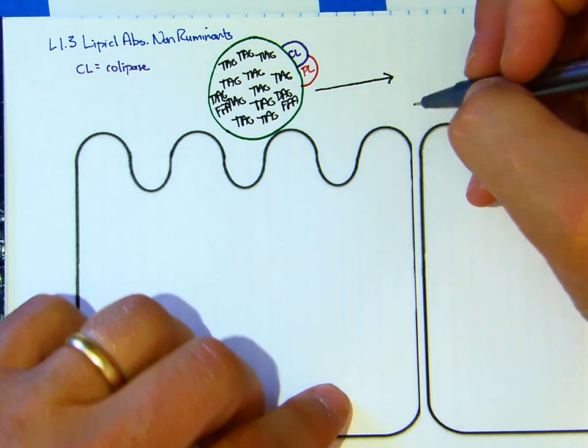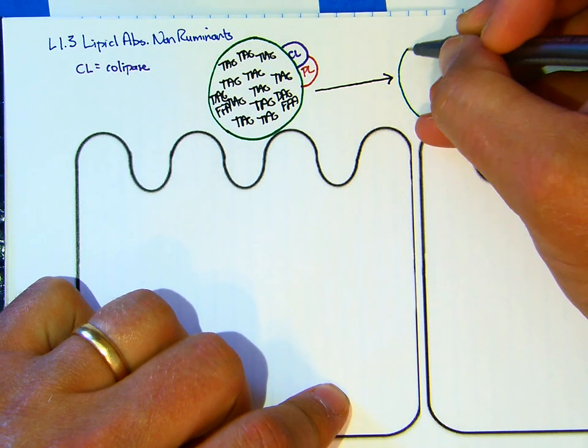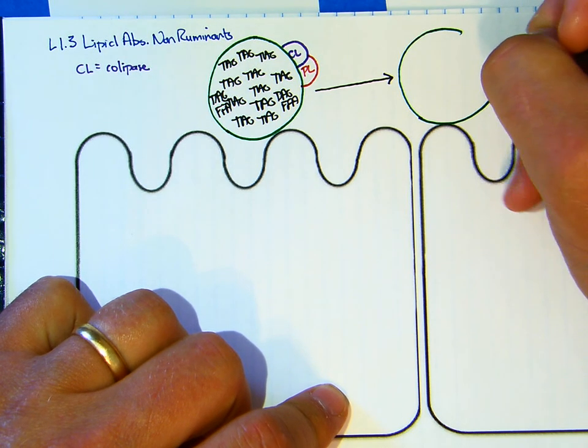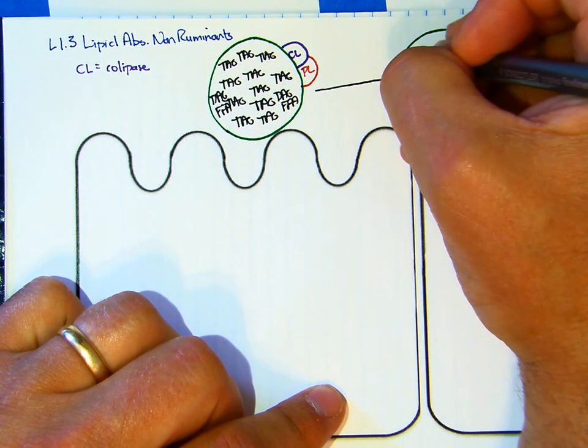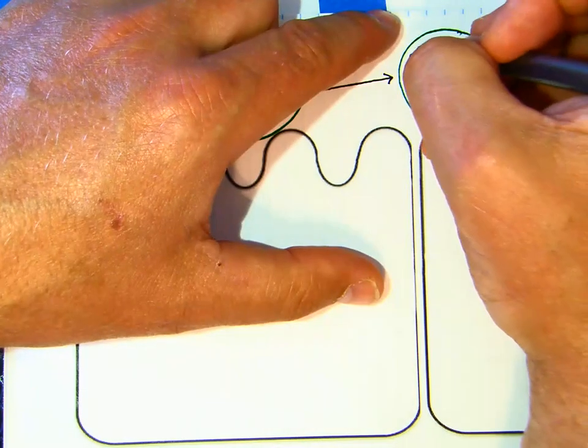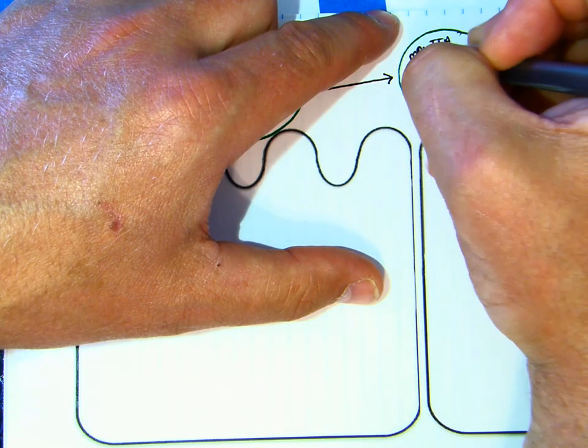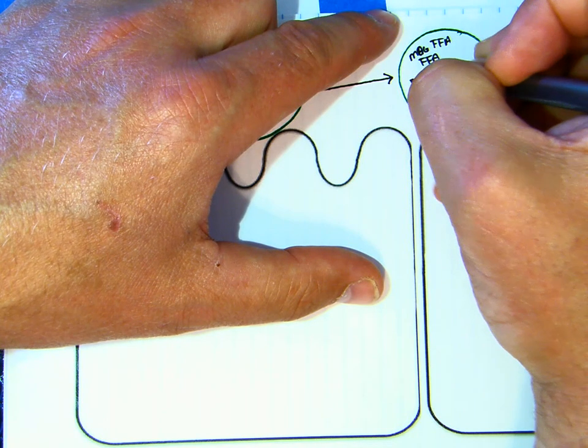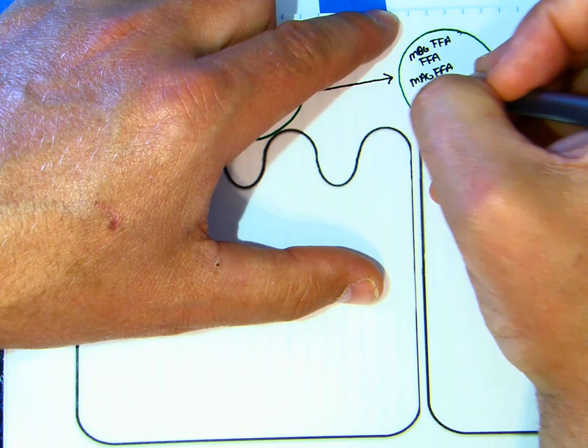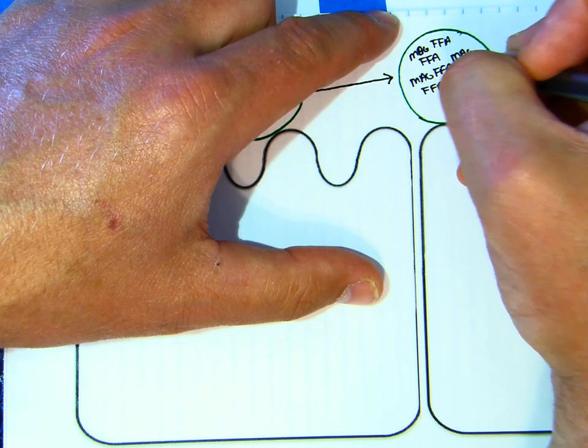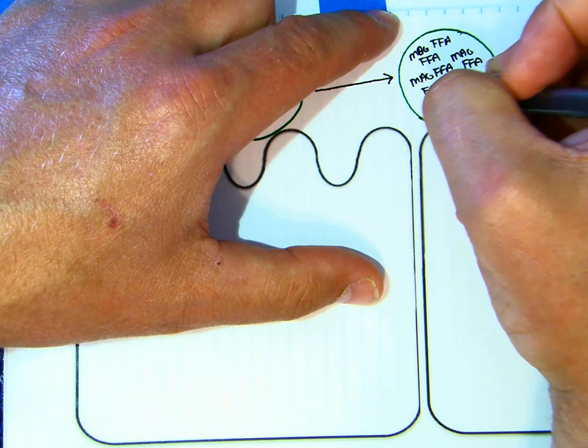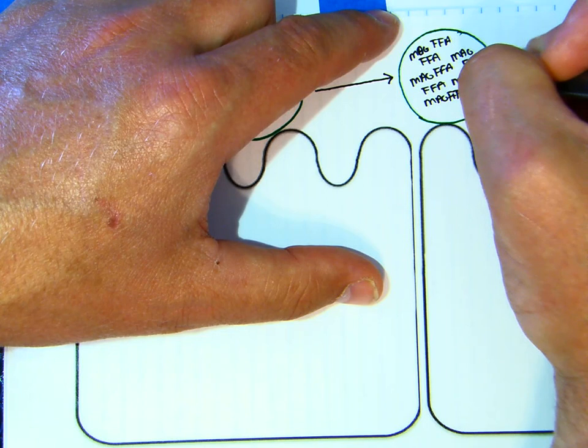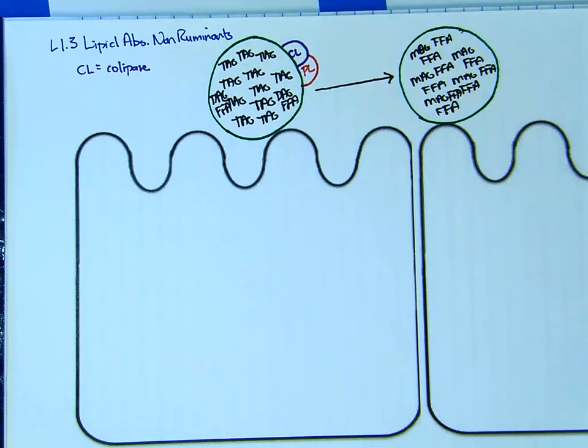We'll redraw the bile surrounding our fat droplet. This time we will have mag and two free fatty acids. That's what we end up with—a fat droplet full of mag and free fatty acids.